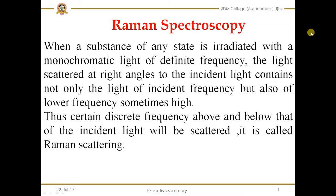In 1928, he observed that when a substance of any state or a molecule of any state is irradiated with monochromatic light of a definite frequency, then the light is scattered at right angles to that of the incident radiation. The frequency of the scattered light may be lower or higher than that of the incident light, or it may be equal to the frequency of the incident light. These discrete frequencies above and below the frequency of the incident light will be scattered, and that is called Raman scattering.